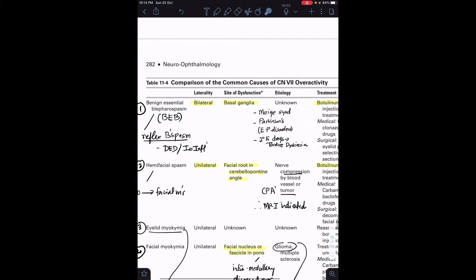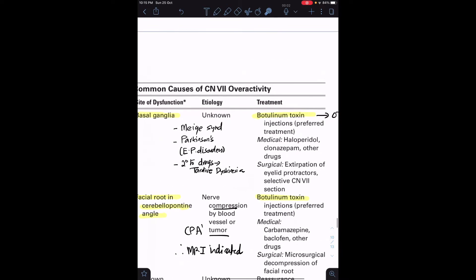It's idiopathic but there are some associations: Meige syndrome, extrapyramidal disorders like Parkinson's and Huntington's disease, and secondary to drugs called tardive dyskinesias, specifically antipsychotic drugs. The treatment of choice is botox - we inject botulinum toxin into the orbicularis oculi muscle. In fact, botox is the treatment of choice for many of the conditions we'll be discussing.